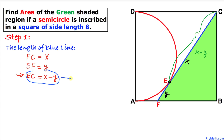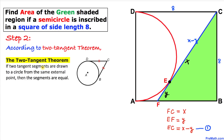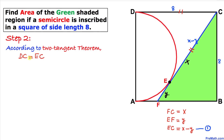For our second step, let's recall the Two Tangent Theorem: if two tangent segments are drawn from a circle from the same external point, then the segments are equal in length. According to this theorem, tangent line CD and tangent line EC are equal, so DC equals EC. We know DC equals 8, therefore EC equals 8.